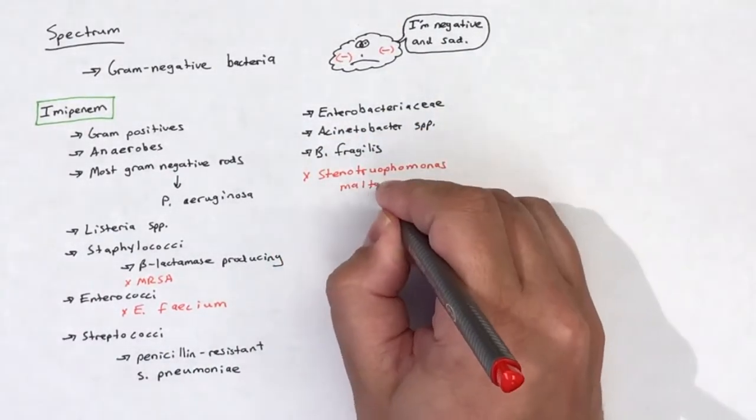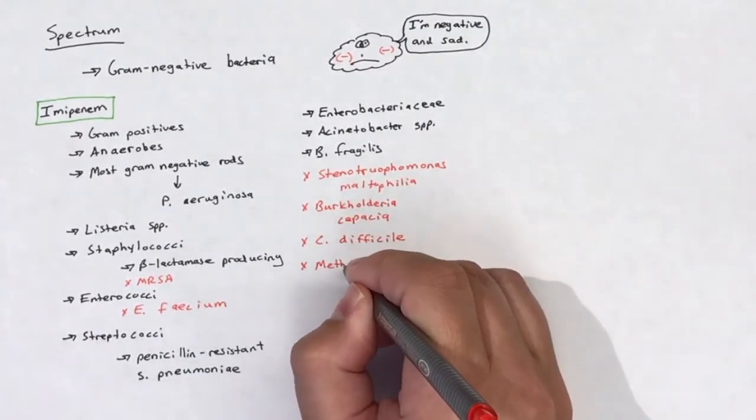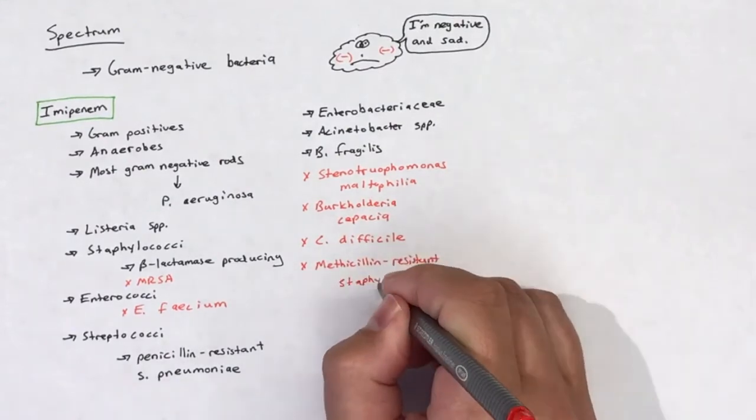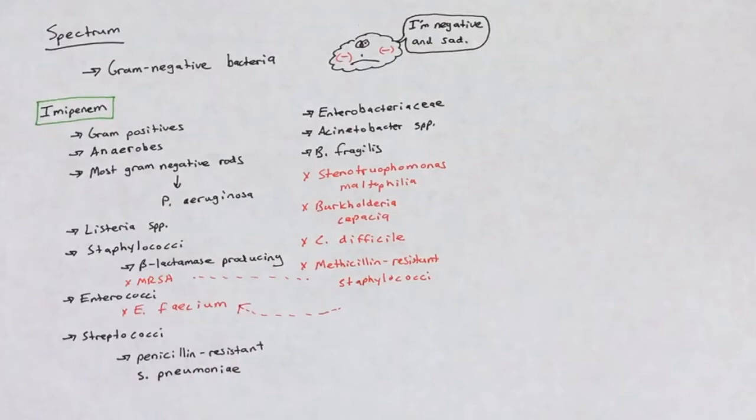Bacteria that are resistant to imipenem include Stenotrophomonas maltophilia, Burkholderia cepacia, Clostridium difficile, methicillin-resistant strains of staphylococci (i.e. MRSA), and Enterococcus faecium.